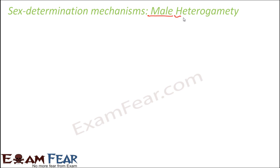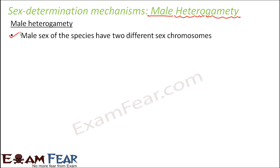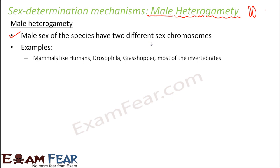What is the meaning of male heterogamity? Hetero means different, and gamity is derived from the word gametes. So males have different gametes as far as the sex chromosomes are concerned. Male heterogamity means the male sex of the species has two different sex chromosomes. This is seen in organisms like mammals including human beings, insects like Drosophila, grasshopper, and most invertebrates. In these organisms, only the male has two different sex chromosomes, while the female has two similar sex chromosomes.